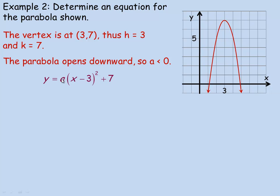One way to find a is called the step method. Normally, for y equals x squared with no transformations, if you go one block right or left from the vertex, you go either up or down one. In this case, notice that going left one block or right one block from the vertex, you go down 2 — so that means a is negative 2. That's a quick way to get it from the graph, and we can be pretty confident that a is negative 2 or very close to it.